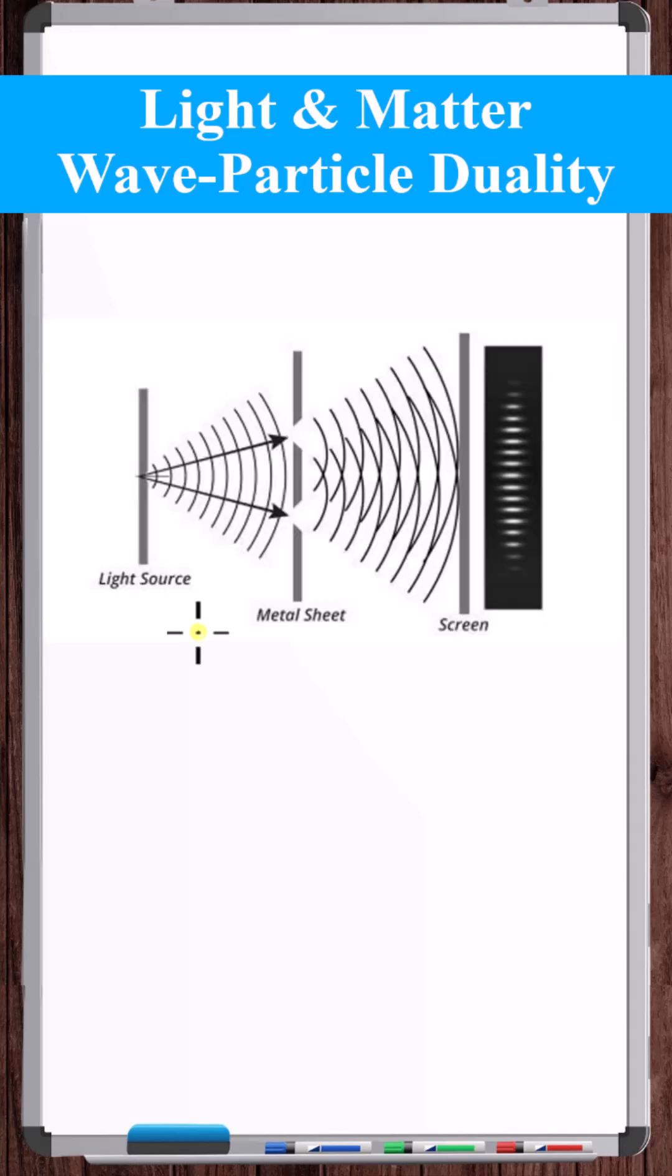Isaac Newton's view that light was made up of small particles traveling in straight lines was dominant. In the 19th century, this changed with the double slit experiment using light.